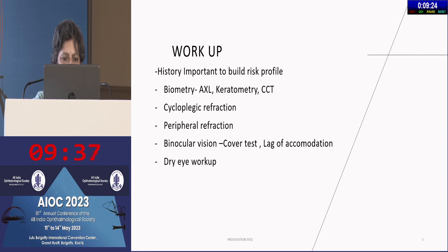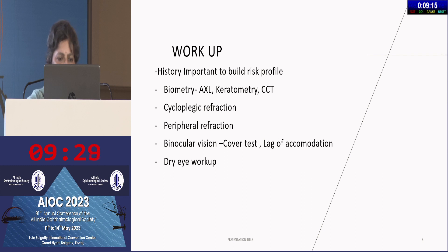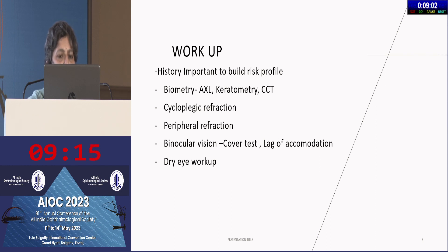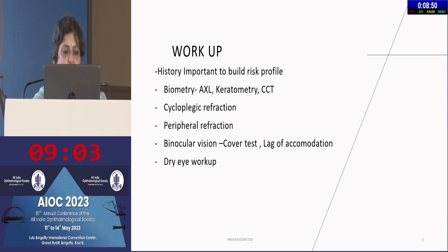At one time when we worked up these patients, we only used to ask cursory history. But now history is important because your interventions will depend on whether one parent is myopic, both parents are myopic, or the child was born premature or full term. That builds your risk profile, because if both parents are myopic, the child is six times more likely to develop progressive myopia than if only one parent is myopic. So history is important.